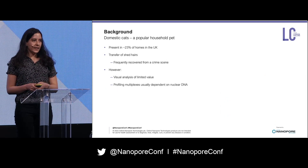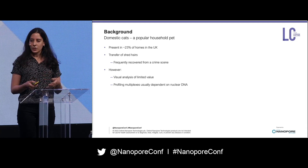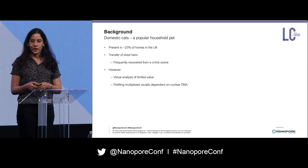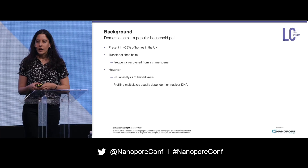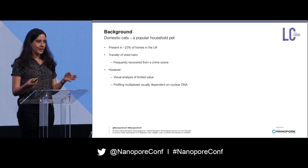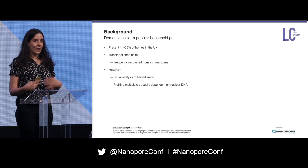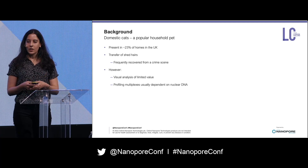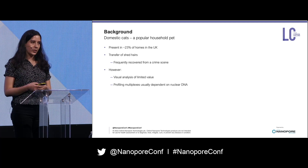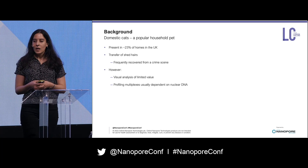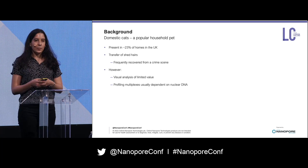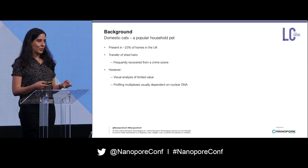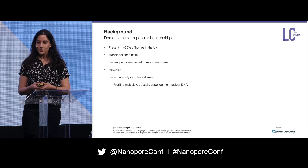Domestic cats are a very popular household pet. They're found in about a quarter of homes in the UK, and if you have a cat you'll know that their hair gets everywhere in your home and on your clothes, so they can be easily transferred. These shed hairs are frequently recovered from crime scenes, but they are of limited value in visual analysis because there's so much variation even within a cat.